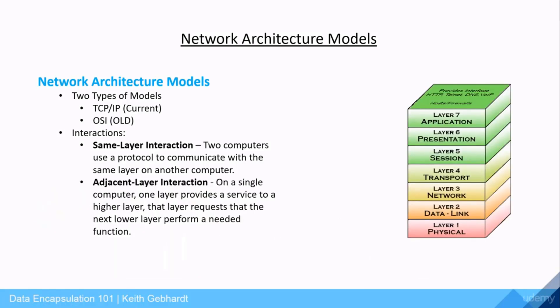The second type of interaction is an adjacent layer interaction where it's only dealing with a single computer, and one layer will provide a service to the higher layer. That higher layer requests that the next lower layer performs a needed function.